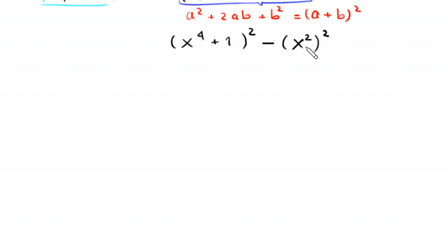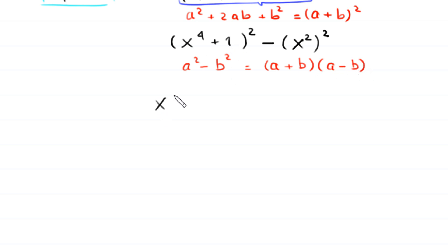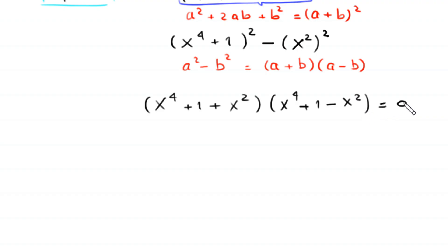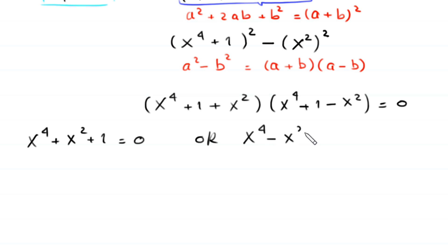Now we have a difference of two squares, so we apply the identity a² minus b² equals (a plus b)(a minus b). This becomes (x to the power 4 plus 1 plus x²) times (x to the power 4 plus 1 minus x²) equals 0. From here, either x to the power 4 plus x² plus 1 equals 0, or x to the power 4 minus x² plus 1 equals 0. We can find the eight solutions by solving these two equations.